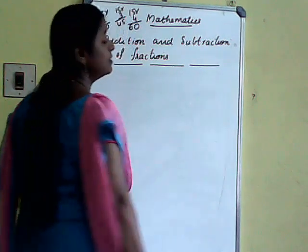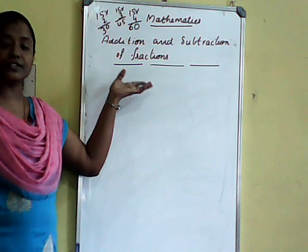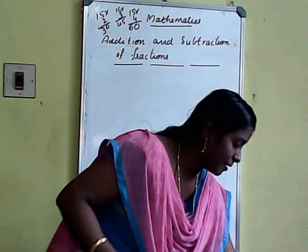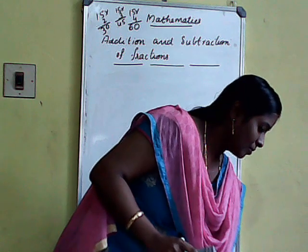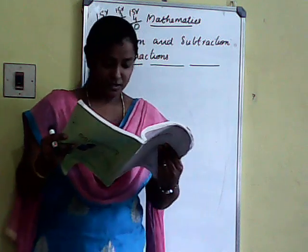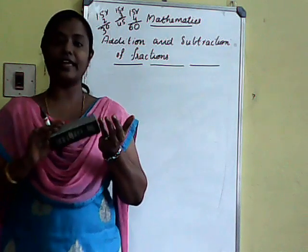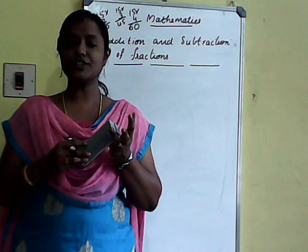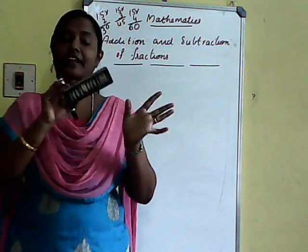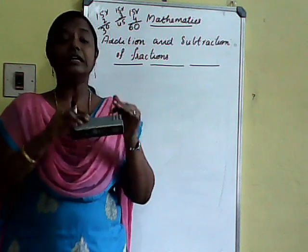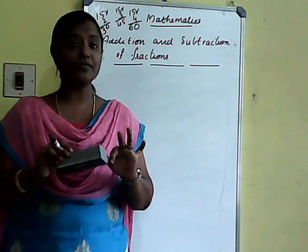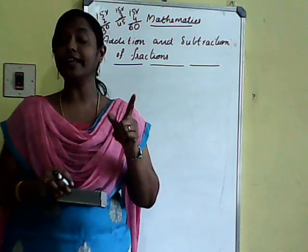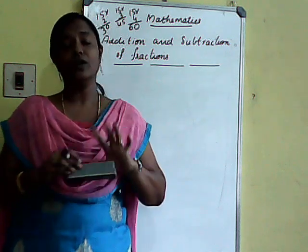This same procedure applies to subtraction as well. For unlike fractions in subtraction, we do the same operation — just change addition to subtraction. To summarize: for like fractions, denominators are already the same, so we just do the operation only on the numerators — whether addition or subtraction. For unlike fractions, we first convert them to like fractions by finding the LCM, then do the operations on the numerators.